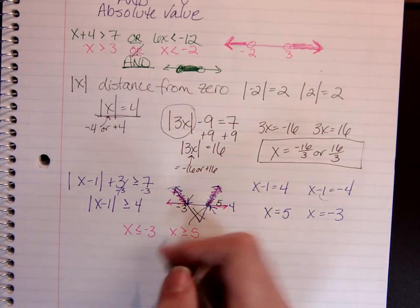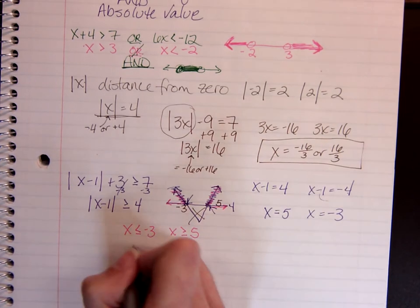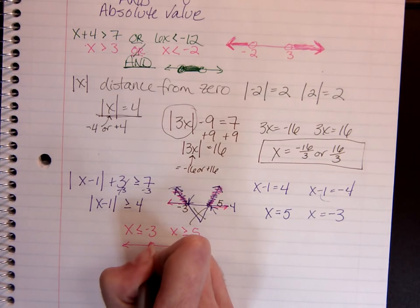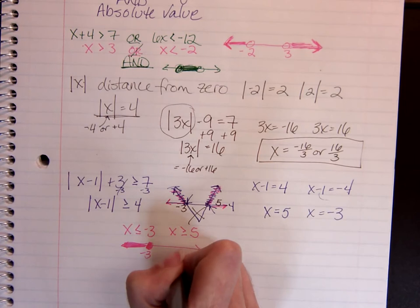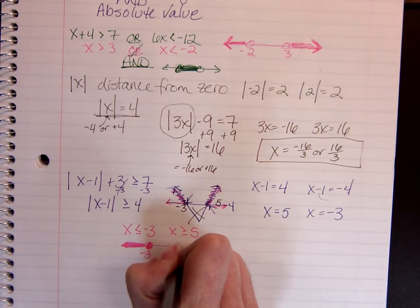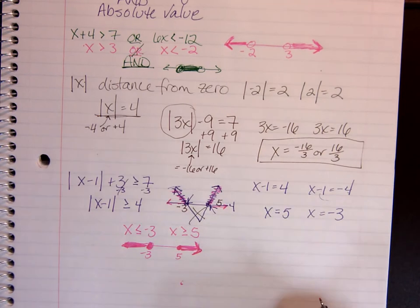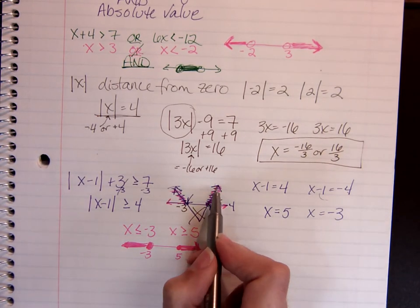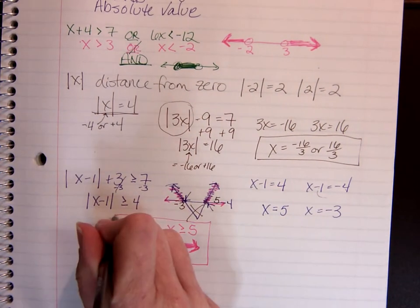I can leave it alone right there or put it on a number line and draw negative 3 shaded back to the left and positive 5 shaded out to the right. But any of these numbers is going to be above or greater than or equal to 4 when we're finished. Okay.